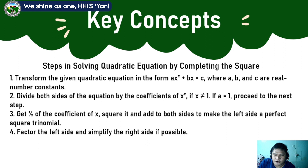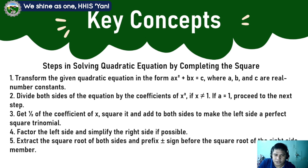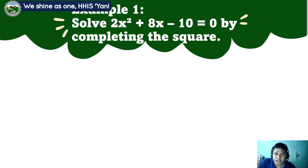Step 4: factor the left side and simplify the right side if possible. Step 5: extract the square root of both sides and prefix a positive and negative sign before the square root of the right side member. Step 6: solve the resulting linear equation.